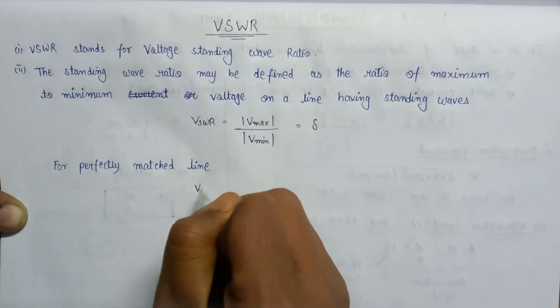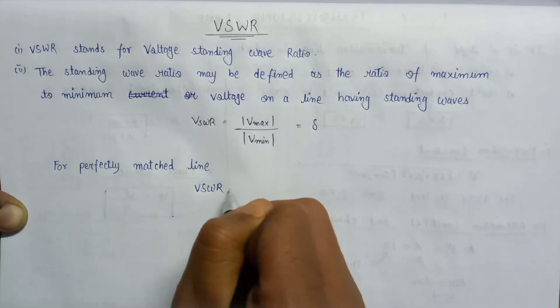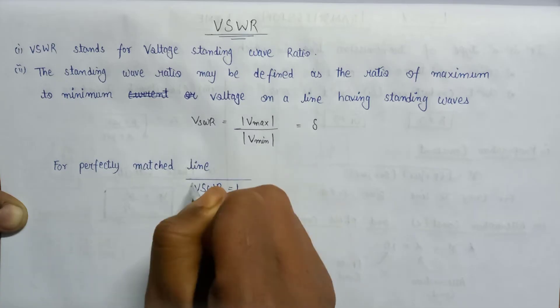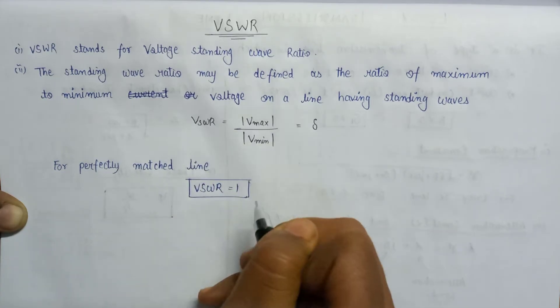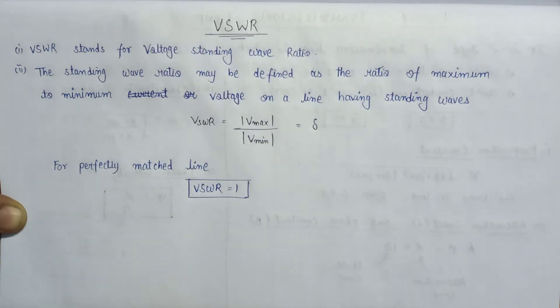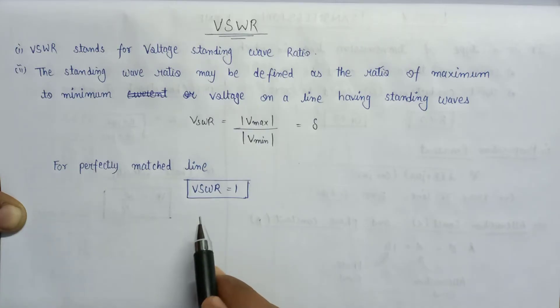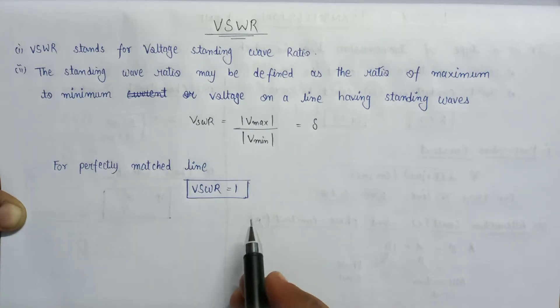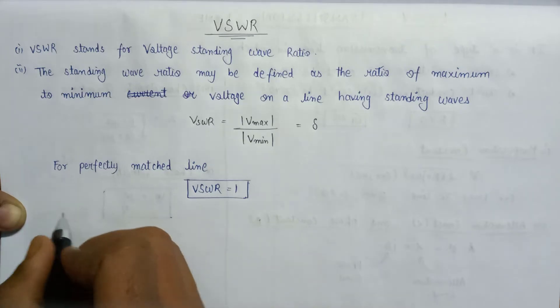And if we write down the expression for VSWR in terms of reflection coefficient, then the VSWR will be equals to V max mod over V minimum mod.